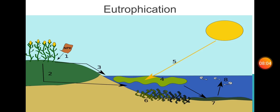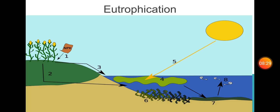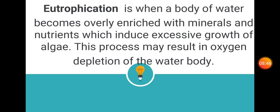The last topic is eutrophication. We use fertilizers called NPK — nitrogen, phosphorus, and potassium. When these nutrients wash into a water body, they cause excessive algae growth. Eutrophication definition: it is when a body of water becomes overly enriched with minerals and nutrients, which induces excessive growth of algae. This process may result in oxygen depletion of the water body.